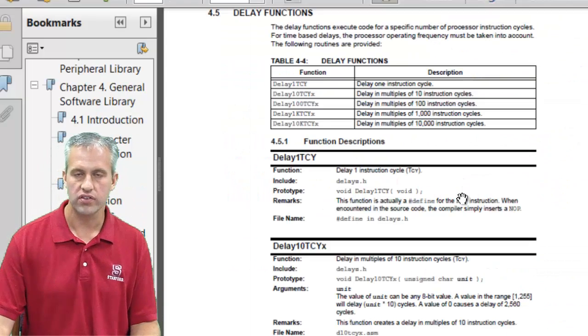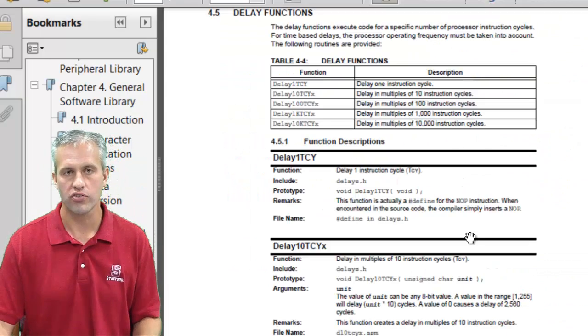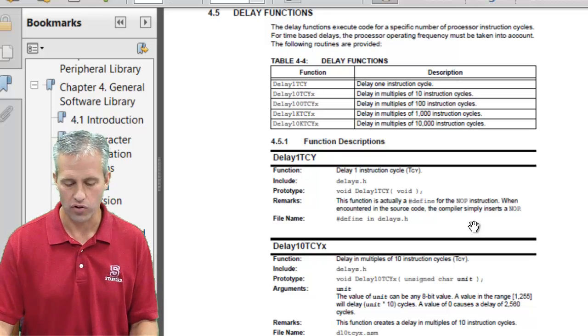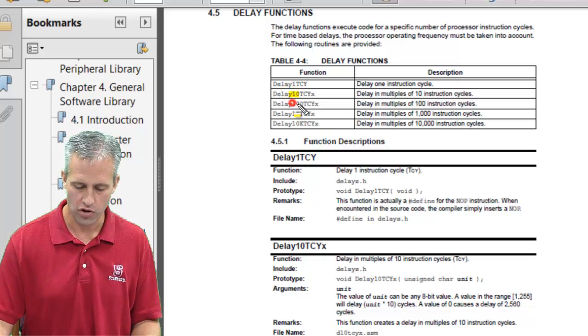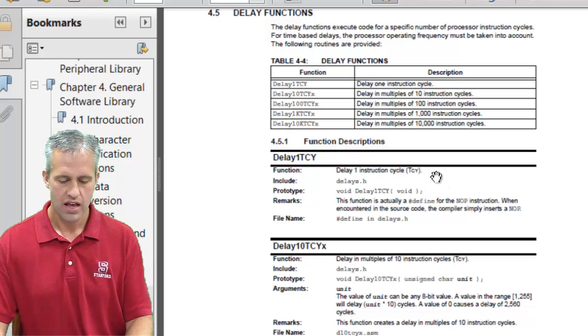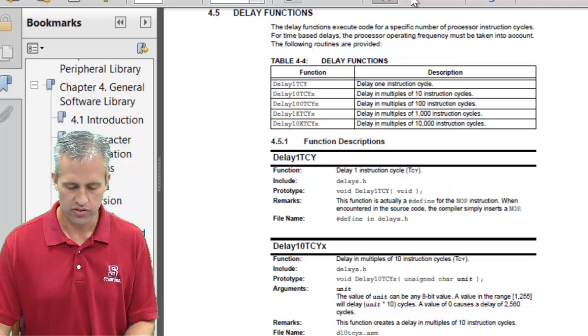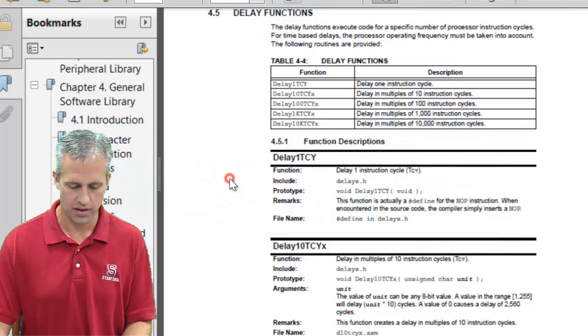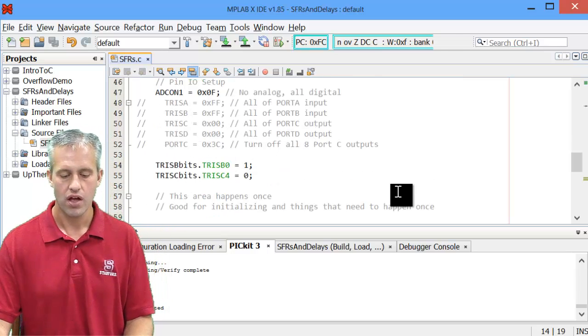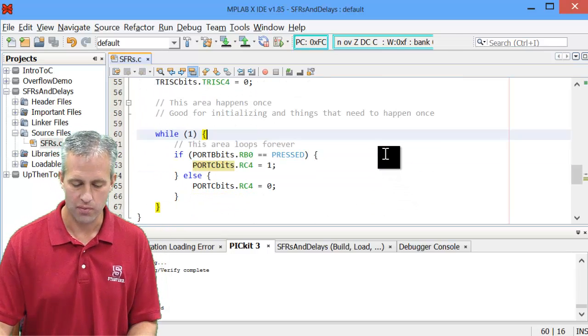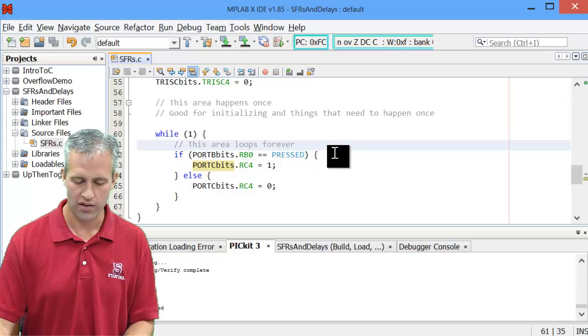And so the way these work is they delay for a different number of instruction cycles. And they've got a multiplier on them. So there's one if you want to delay in multiples of 10. There's one if you want to delay in multiples of 100, multiples of 1,000, multiples of 10,000. Instead of talking about it forever, let's just go do it. So let's switch over to MPLAB. And let's go ahead and modify an example. I've still got my example set up from last time when I was doing button pressed and unpressed.